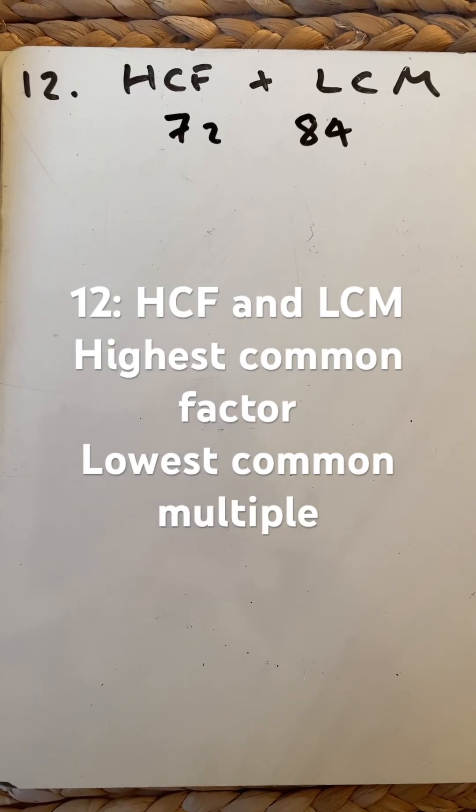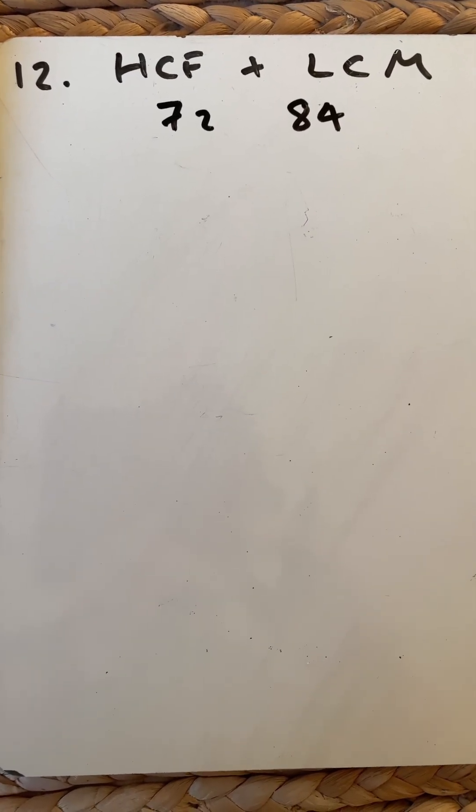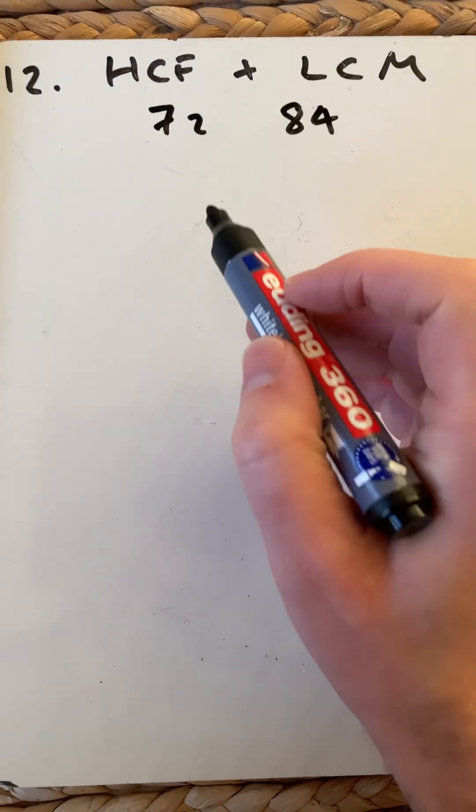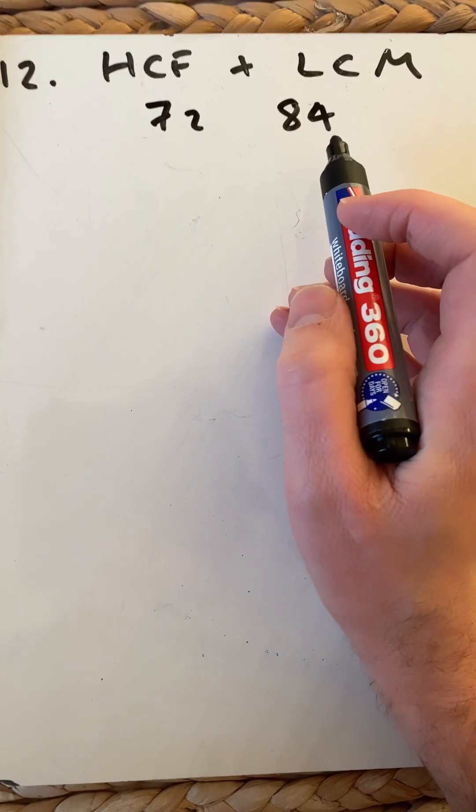Hello and welcome to Martin Maths doing another short for the Maths GCSE Foundation checklist. This is the highest common factor and lowest common multiple. I'm going to find those two for 72 and 84.